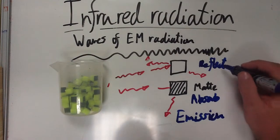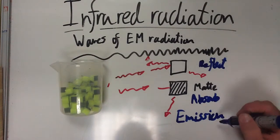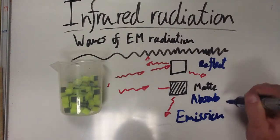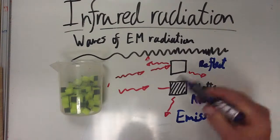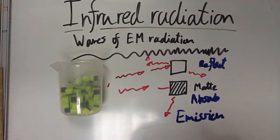So you need to understand that reflection, absorption, and emission, giving out, taking in, and bouncing off, of infrared radiation depends on the nature of the surface.